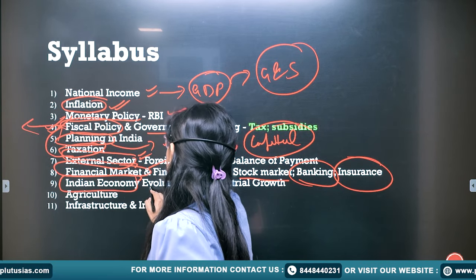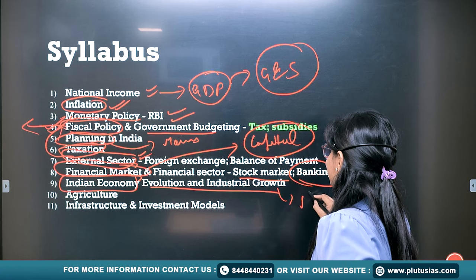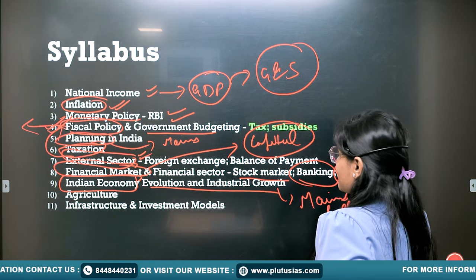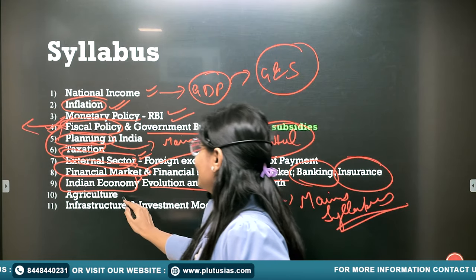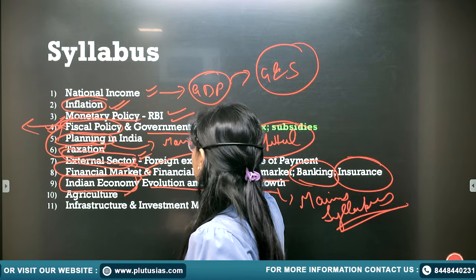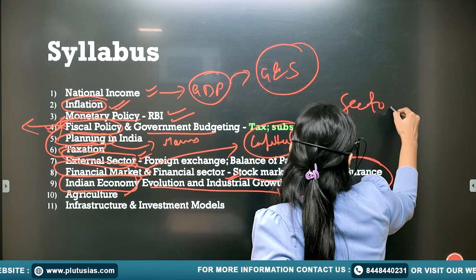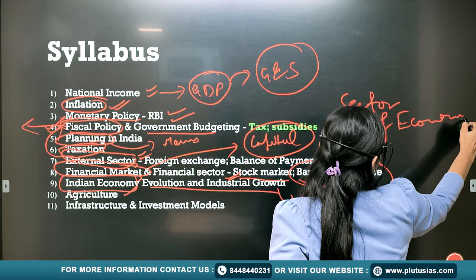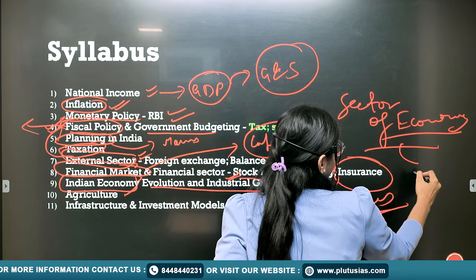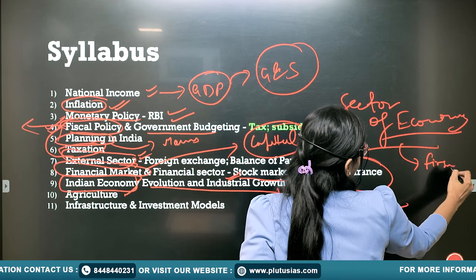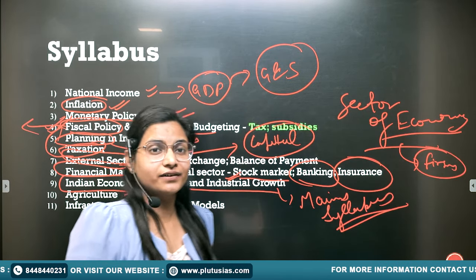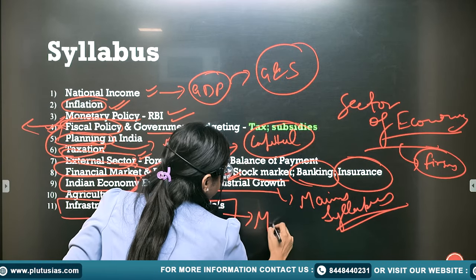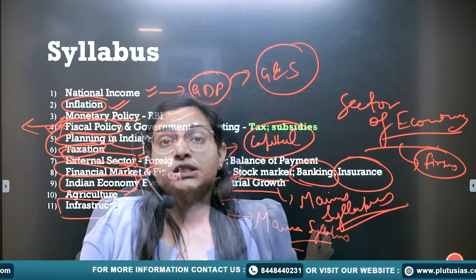Then, the Indian economy, evolution and industrial growth — it is covered in the mains syllabus. Agriculture and industrial growth — you need to read about the different sectors of the economy. What are the different sectors? It could be the primary sector, secondary sector, and the tertiary sector. Infrastructure and investment models are also directly given in the mains syllabus.